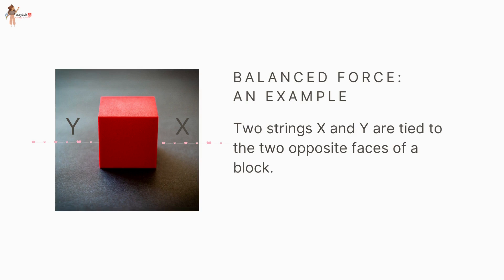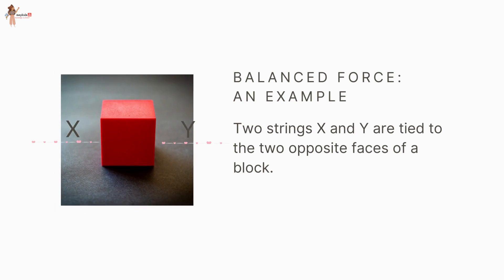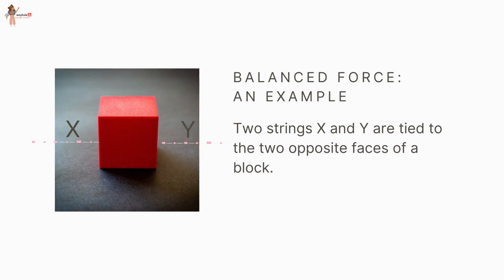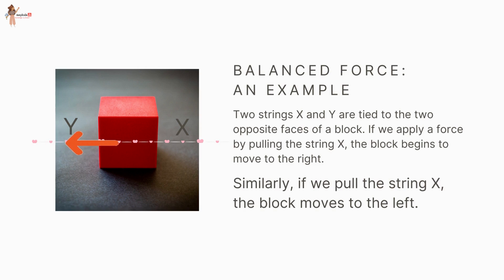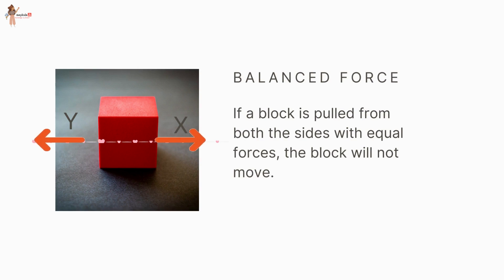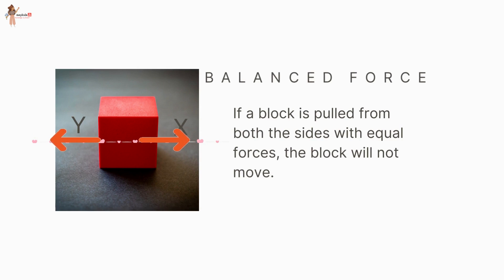For example, two strings X and Y are tied to the two opposite faces of a block. If we apply a force by pulling string X, the block begins to move to the right. Similarly, if we pull string Y, the block moves to the left. But if the block is pulled from both sides with equal forces, the block will not move. Such forces do not change the state of rest or motion of an object and are called balanced forces.